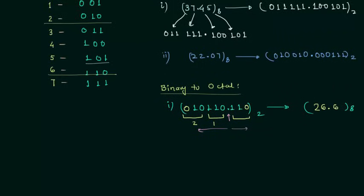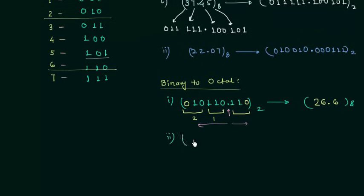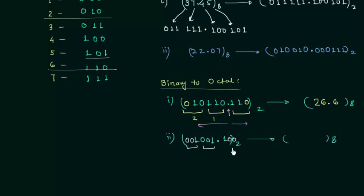The second example: the binary number is 1001.1, and we want the octal equivalent. For the integer part, moving right to left, the first group is 001 and the second group is 001 — we add two leading 0s. For the fractional part, we add two trailing 0s to get 100. 001 is 1 and 100 is 4, so the octal equivalent is 11.4. Adding extra groups of 000 makes no difference as they are redundant.